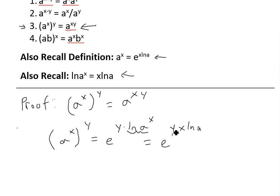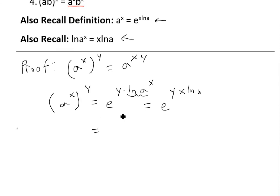This is just y times x, and it doesn't matter which side you put it. So we'll rearrange it to make it e^(xy·lna)—y times x, x times y, same thing.